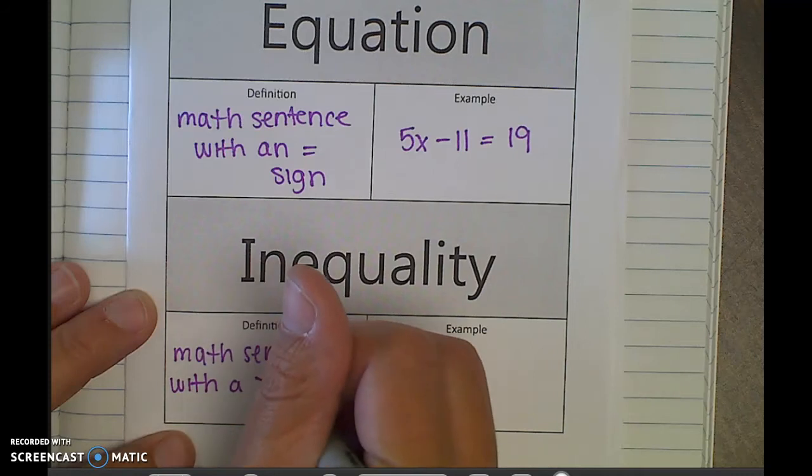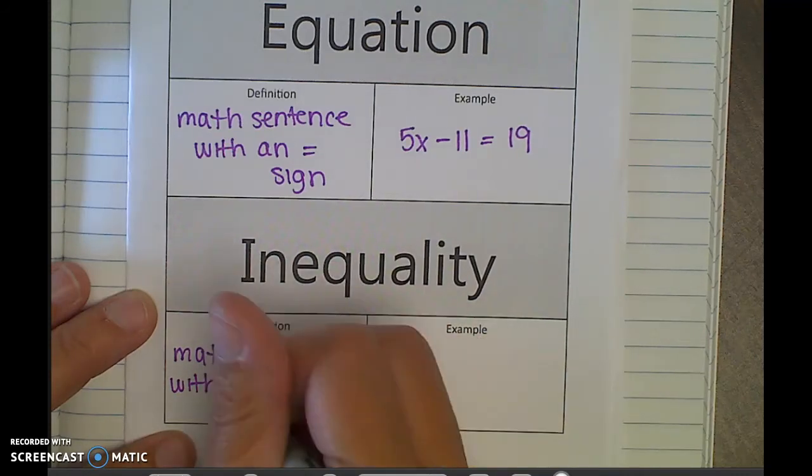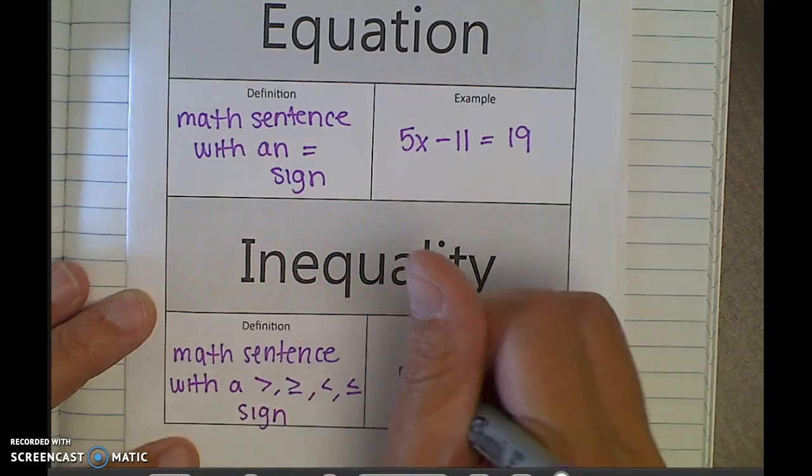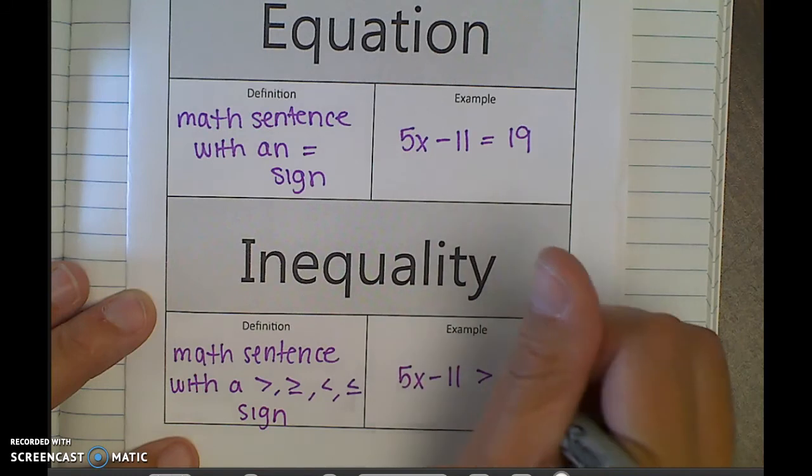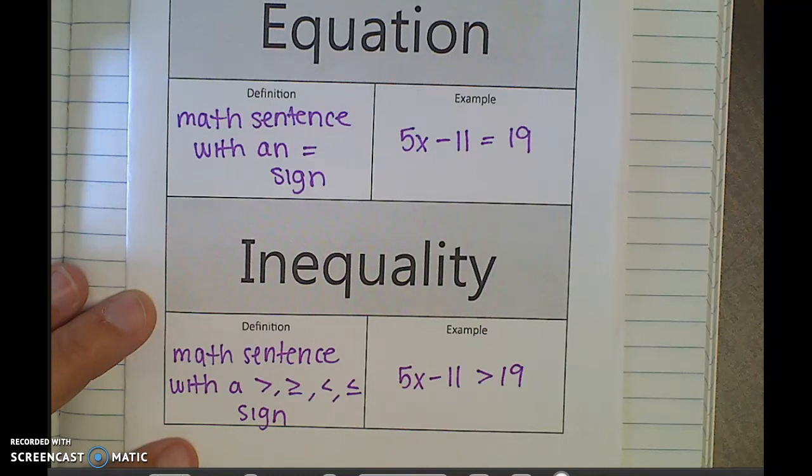With a greater than, greater than or equal to, less than, less than or equal to sign. So for example, 5x minus 11 is greater than 19. And again, just like with all of them, you can sometimes simplify or solve. And sometimes you don't need to or you can't.